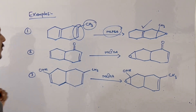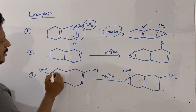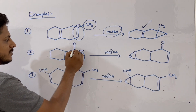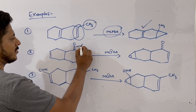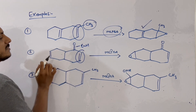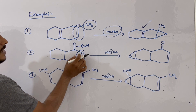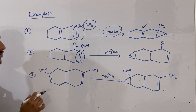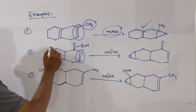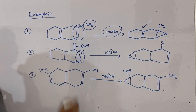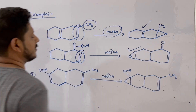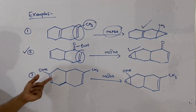In the second example, you also have two alkenes. One alkene is attached to a carbonyl group, which is an electron-withdrawing group, so the electron density of that alkene is reduced. Therefore, mCPBA will definitely react on the other alkene, and you get the corresponding epoxide.